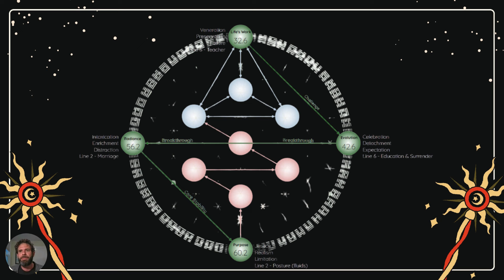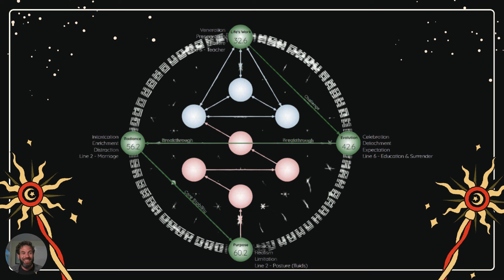This overall profile would be considered the profile of a 6-2. If you've ever heard two numbers like that, it's taken from the lines of the activation sequence. In every profile, the lines of the life's work and the evolution will always have the same line, and the lines of the radiance and purpose will always have the same line. Those pairs are what are called programming partners — opposites that reinforce a pattern in your life. My shadow of life's work is failure, and the shadow of my evolution is expectation. I have an expectation, and when it doesn't get met, I perceive that as failure. But there is no such thing as failure, and that's what leads me to the gift of detachment.